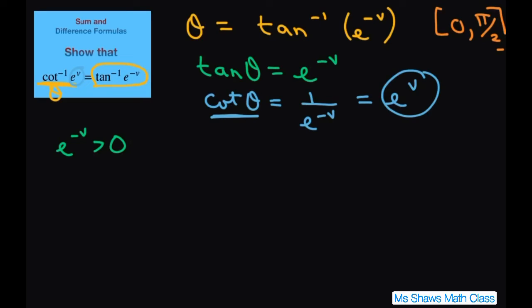So that means let's go back to this: cotangent inverse of e to the v. That's what we have, which equals cotangent inverse, and e to the v equals cotangent of theta.